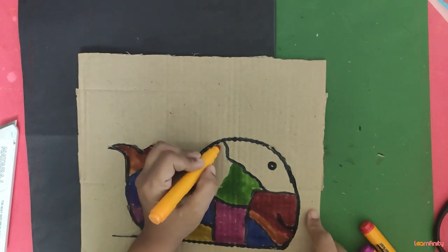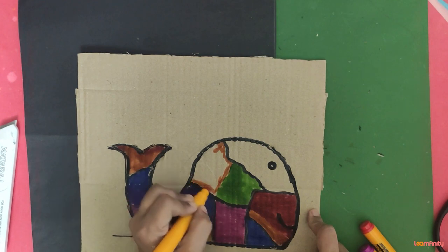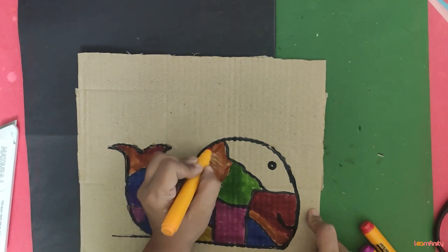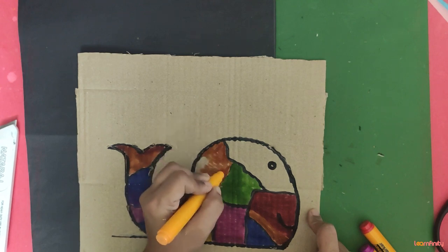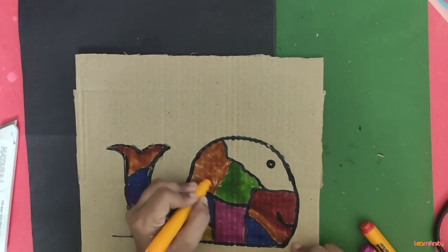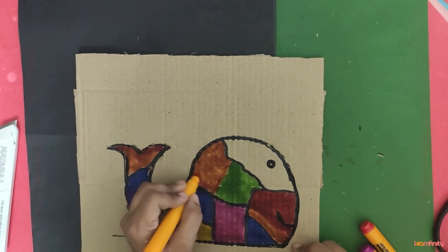This orange, I am repeating here also. It's fine if you get uneven shade because the cardboard already has its texture, yes, like a line texture it has, okay. So no worries.